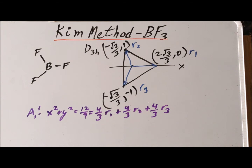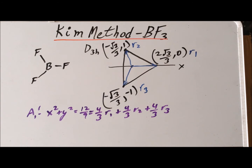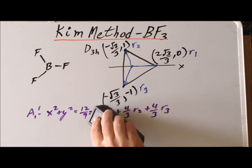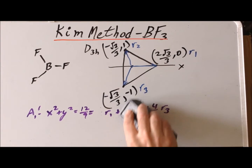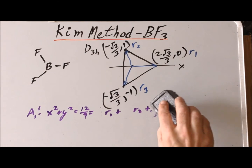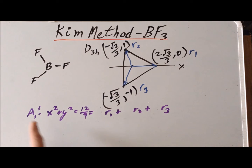Now, ultimately, this is a solution to the Schrödinger equation for the harmonic oscillator problem. And therefore, we know that if we multiply that solution by any constant, we will also have a solution. So we realize we can multiply through the entire equation by 3 quarters to give each coefficient a value of 1. That gives us R1 plus R2 plus R3 for the A1 prime stretch of boron trifluoride.